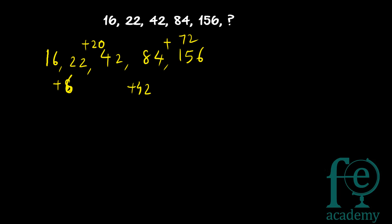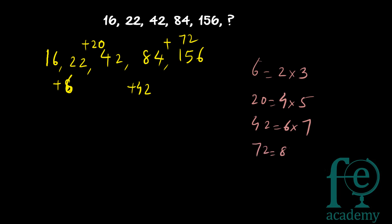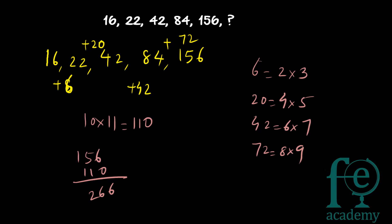Many questions can be asked using the same series of differences: 6, 20, 42, 72. When you find these differences in a question, think of the pattern: 6 equals 2×3, 20 equals 4×5, 42 equals 6×7, 72 equals 8×9 — so the next difference is 10×11 equals 110. Therefore 156 plus 110 equals 266, which is the next number in the series.